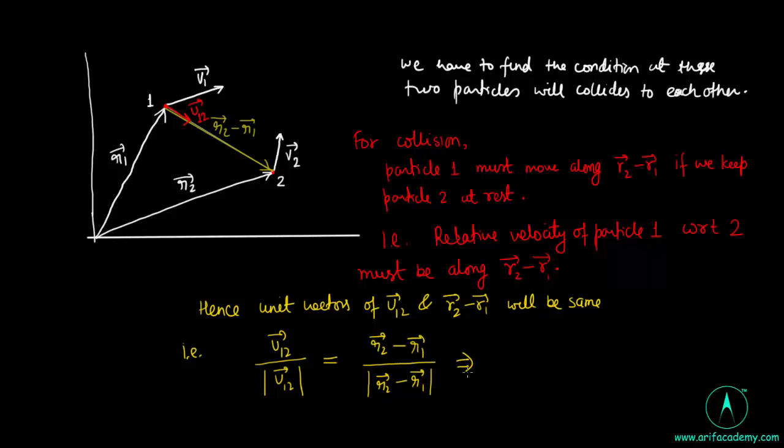That is, this implies v1 minus v2 upon mod of v1 minus v2, this is unit vector, and equal to unit vector of r2 minus r1 upon mod of r2 minus r1. So, we see this is the condition of two particles to collide.